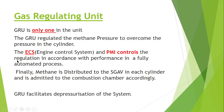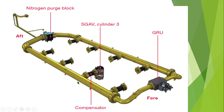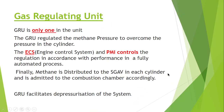Finally, methane is distributed to the SGAV in each cylinder and is admitted to the combustion chamber accordingly. The amount of methane in the system is decided by the GRU, and how much goes to each cylinder is decided by the SGAV. They do this by monitoring the Engine Control System and PMI control system, which monitors performance and based on that regulates the methane pressure to overcome the pressure in the cylinder.